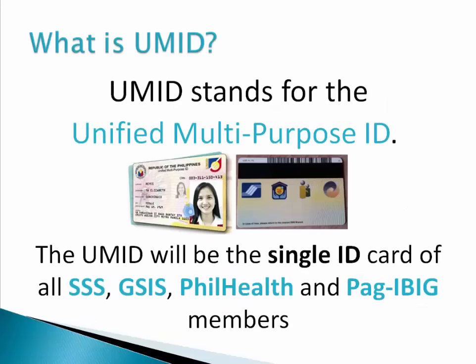So what is UMID? UMID stands for the Unified Multipurpose ID. The UMID will be the single ID card of all SSS, GSIS, PhilHealth, and Pag-Ibig members. And this is a sample of the Unified Multipurpose ID.